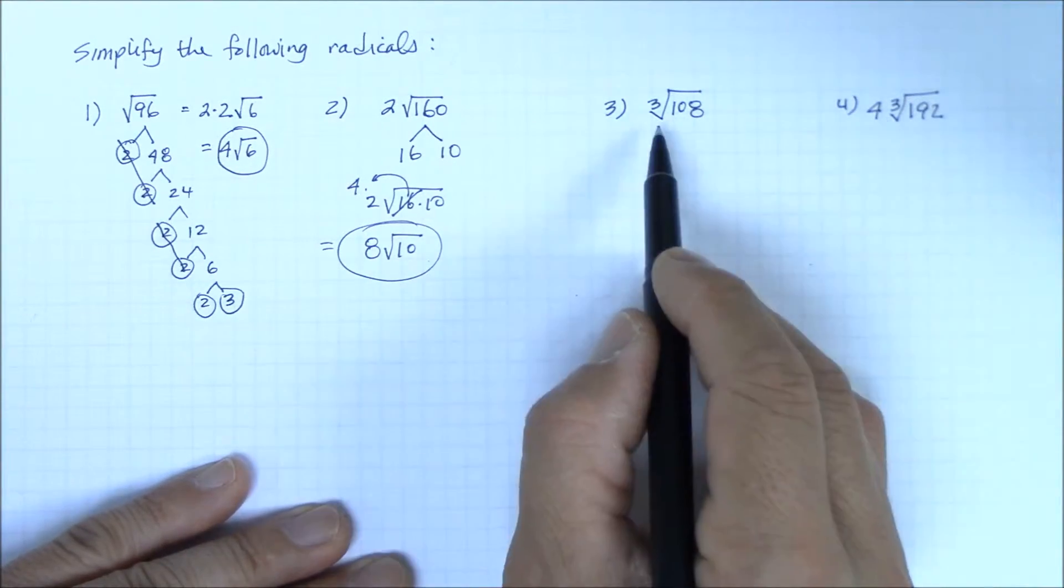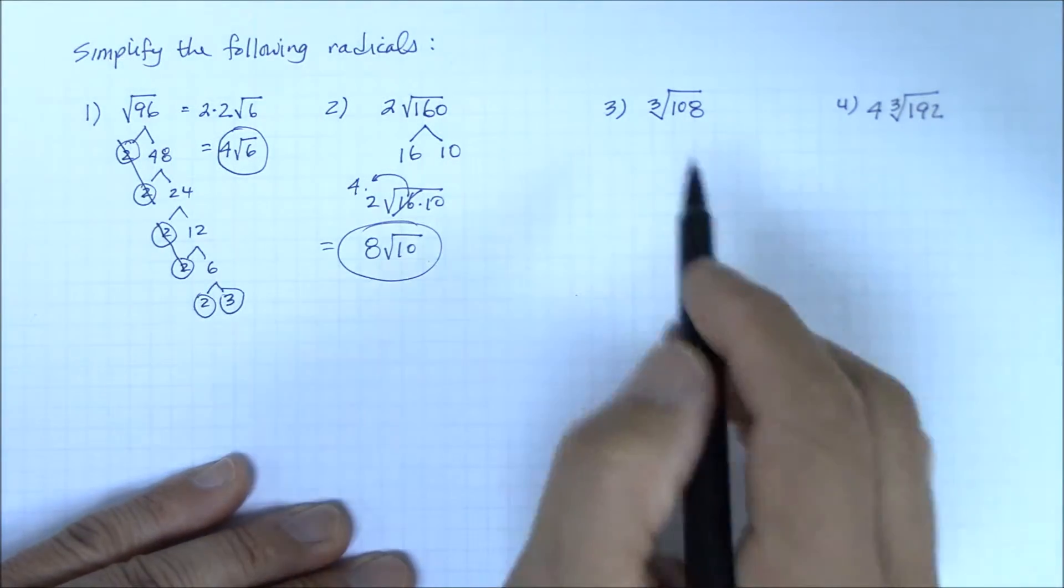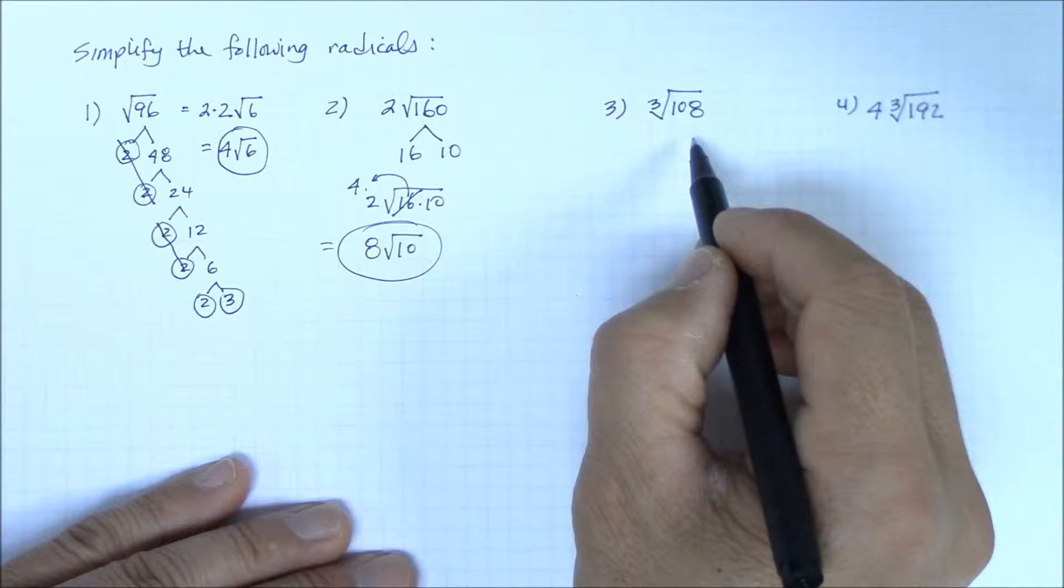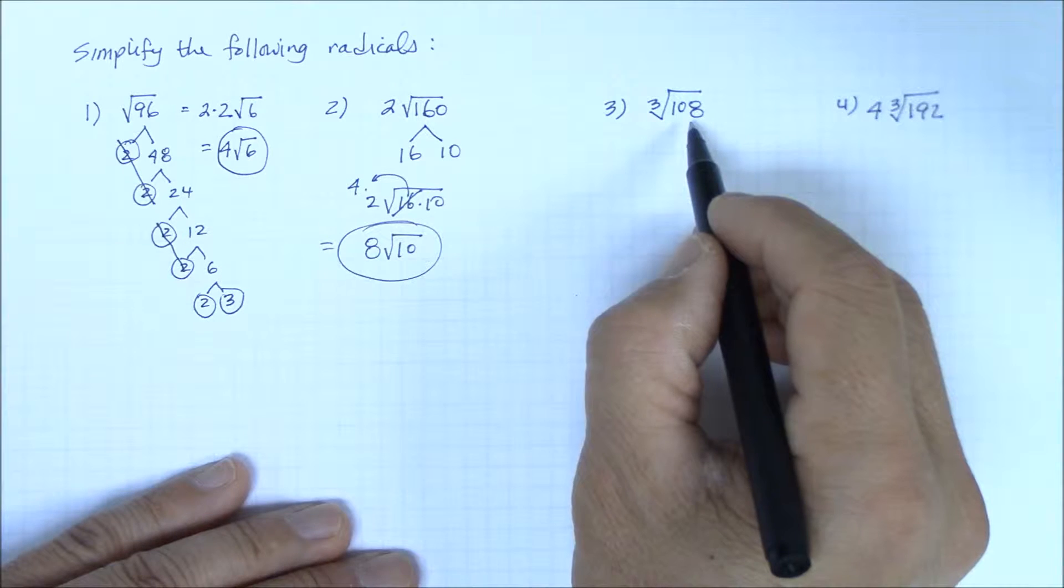we have cube roots. I don't know what exactly three identical numbers you would multiply to get 108, but I know it's not a perfect cube, so let's do a prime factorization to identify all the prime numbers that you would multiply to get 108.